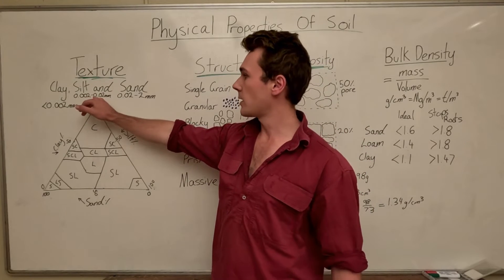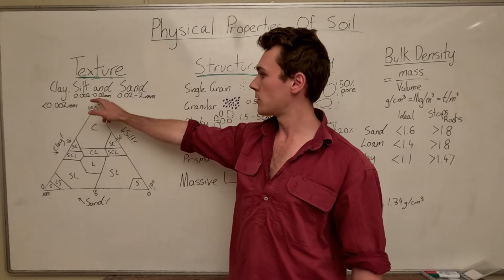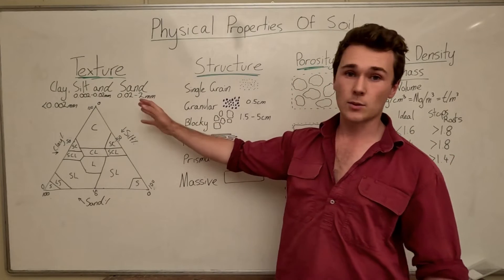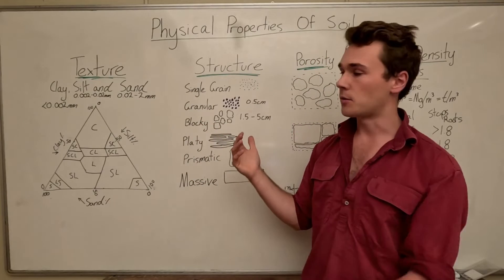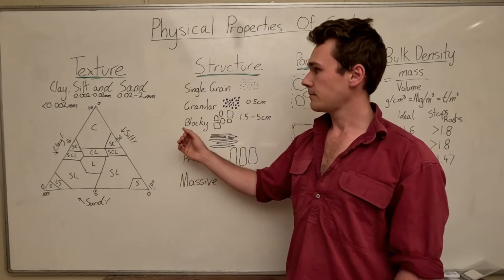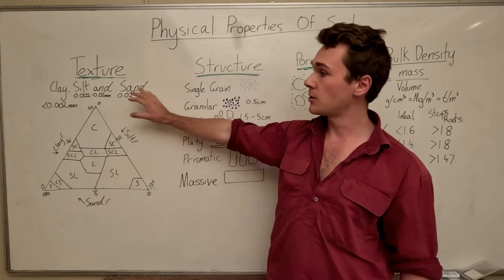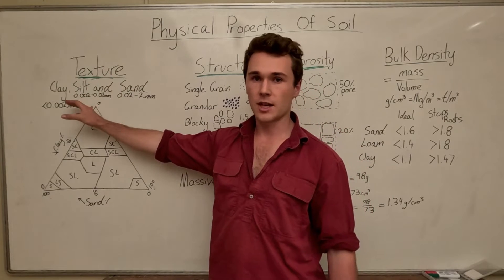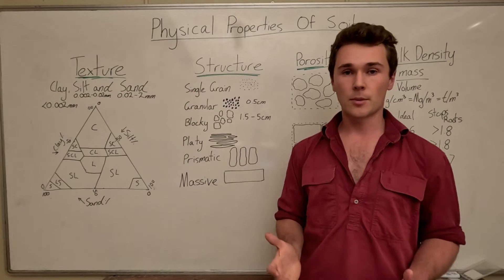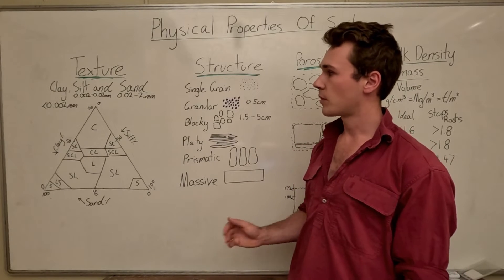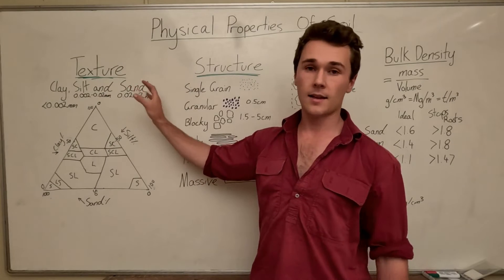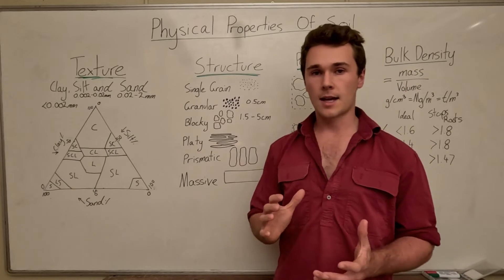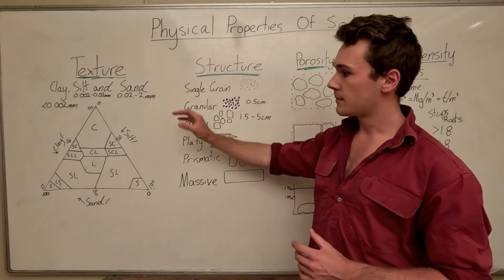Then we have silt, which is a bit larger — from 0.002 to 0.02 millimetres in diameter. And then we have sand, which is quite large — from 0.02 to 2 millimetres. If you get larger than 2 millimetres it's classified as gravel. Sand and silt don't have any charge, so they do not contribute to our cation exchange capacity. These three soil particles make up all of our soils.